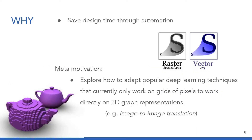We hope to save on design time by automating certain 3D design tasks using graph neural networks. In the process, we hope to explore how to adapt popular deep learning techniques, like image-to-image translation, that currently only work on grids of pixels, to work directly on 3D graphs and 3D models.